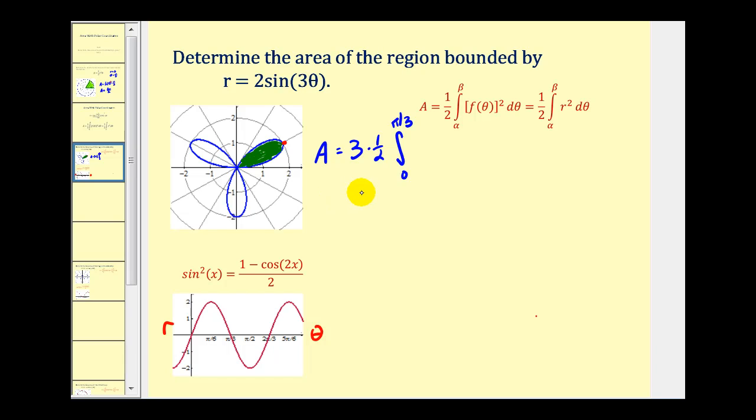We'll take a look at this on the graphing calculator in a moment as well. And then we'll have r squared d theta, where r is two sine three theta, d theta.